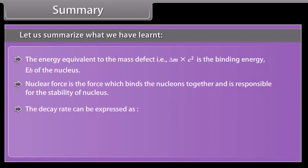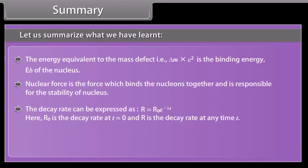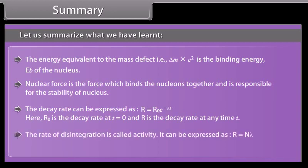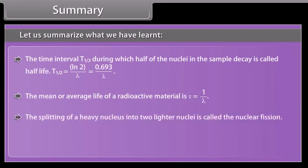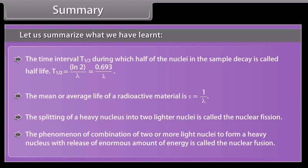Nuclear force is the force which binds the nucleons together and is responsible for the stability of nucleus. The decay rate can be expressed as R equals R not e to the power minus lambda T. Here R not is the decay rate at T equals zero, and R is the decay rate at any time T. The rate of disintegration is called activity. It can be expressed as R equals N lambda. The SI unit for activity is Becquerel. The time interval T half during which half of the nuclei in the sample decay is called half-life. The mean or average life of a radioactive material is tau. The splitting of a heavy nucleus into two lighter nuclei is called the nuclear fission. The phenomenon of combination of two or more light nuclei to form a heavy nucleus with release of enormous amount of energy is called the nuclear fusion.